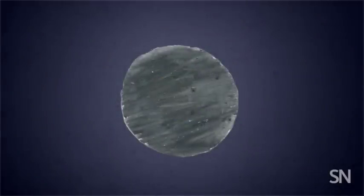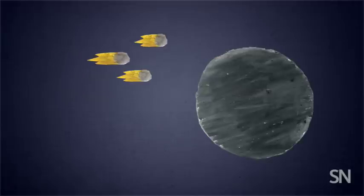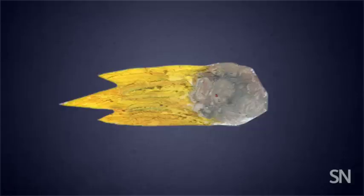So how did water get here? For a while, some scientists thought water rode here on icy dirt balls called comets. But the chemical signature of comet ice doesn't match that of Earth's water. So comets are out.